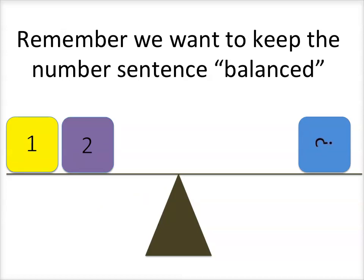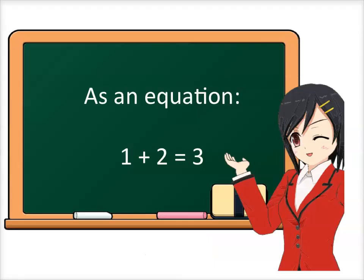What mystery number would go in the blue box? Well, a three would go there because I know that if I add one and two together that equals three. We can write this as an equation or a number sentence like the one below: one plus two equals three.